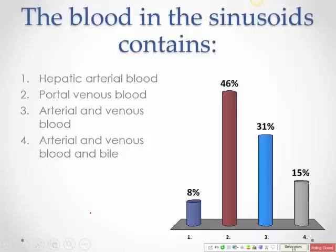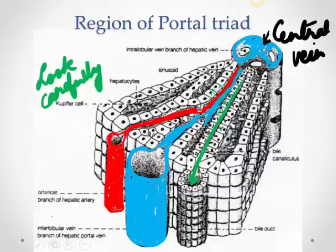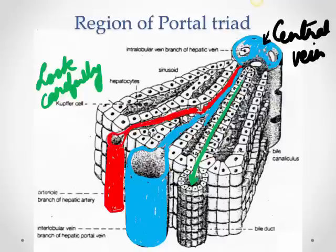The blood in the sinusoids contains both arterial and venous blood — they mix in the sinusoid. Liver cells need oxygen from arterial blood, and also need to remove nutrients from venous blood to metabolize them — forming proteins, glycogen, and fatty acids. Both streams ultimately flow toward the central vein.